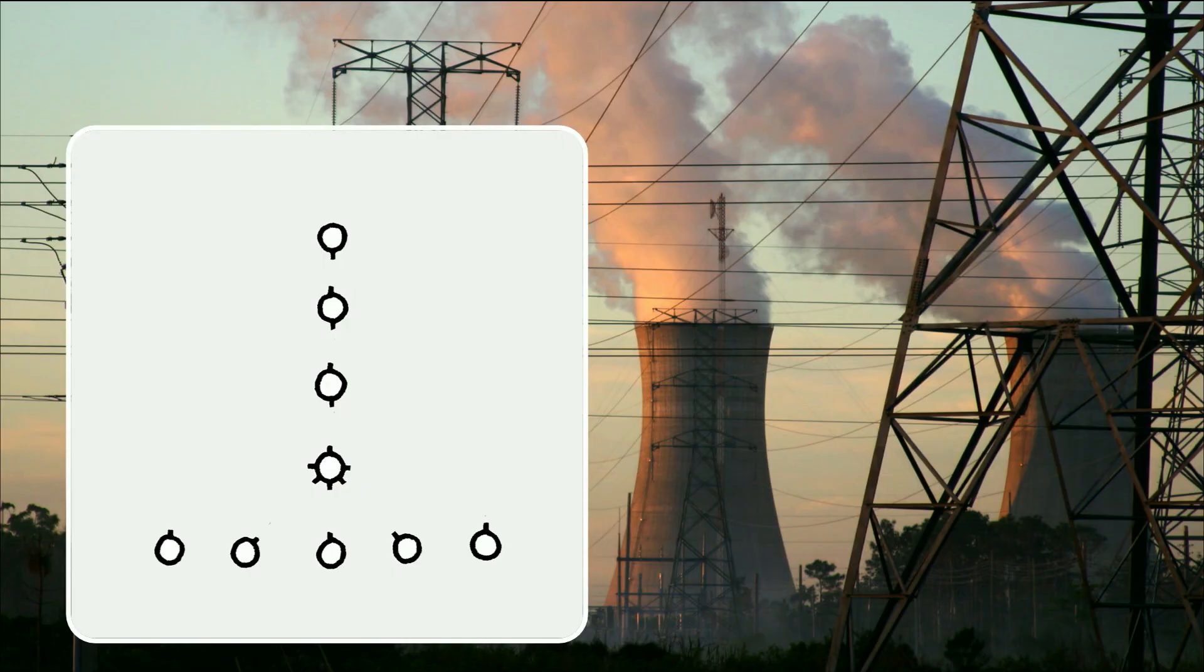The separation can take on many different forms. Mild forms include accounting separations, while the most severe forms are those in which completely different companies are responsible for these operations, with the companies having nothing to do with one another, legally, financially and as far as ownership is concerned.